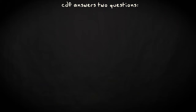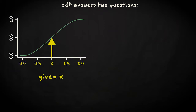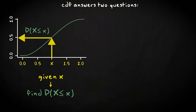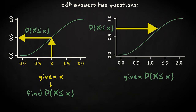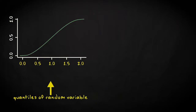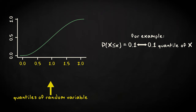You can select a certain value of the random variable at the x axis, and then find which fraction of the observations will be lower than or equal to this value at the y axis. Or reversely, you can select the fraction at the y axis, and then find the corresponding threshold value at the x axis. There is in fact a shorter way of saying that a fraction of the values fall below a threshold value, using the term quantile. For example, a threshold value below which 0.1 of the values are found is called the 0.1 quantile. So the cumulative probability distribution is in fact showing the quantiles for a random variable.